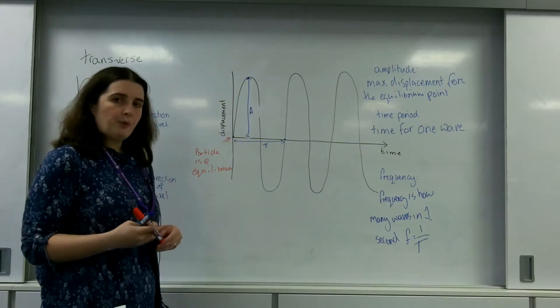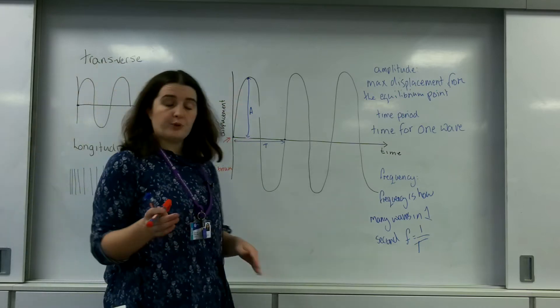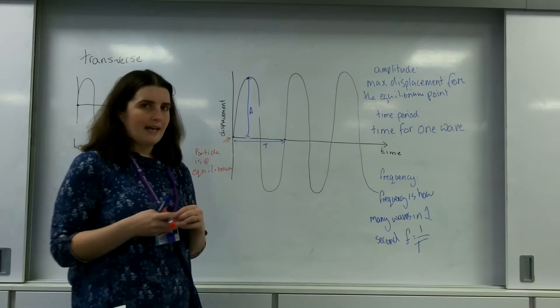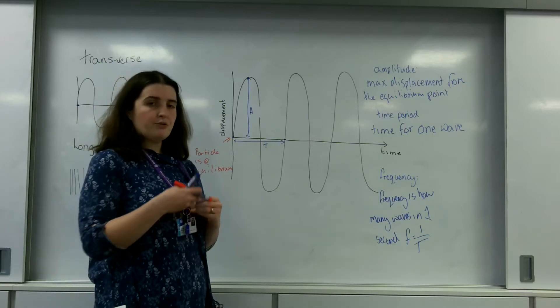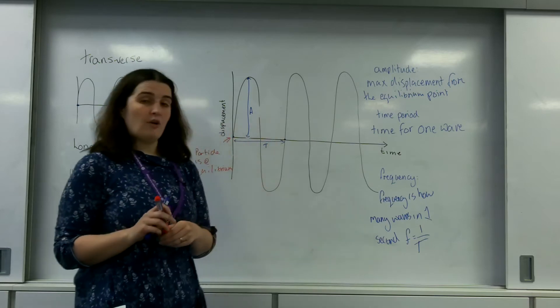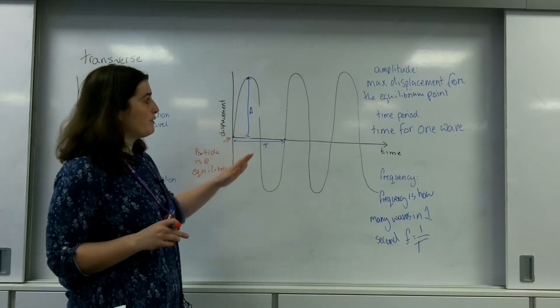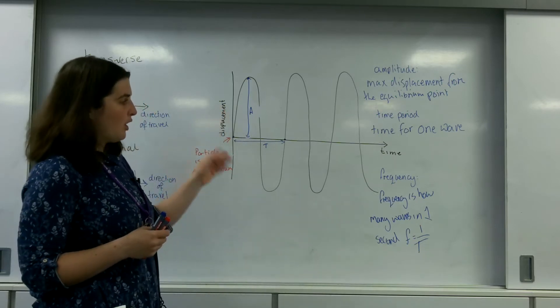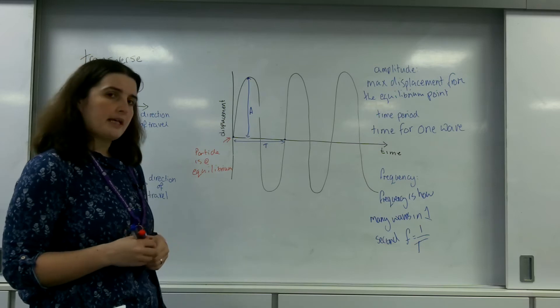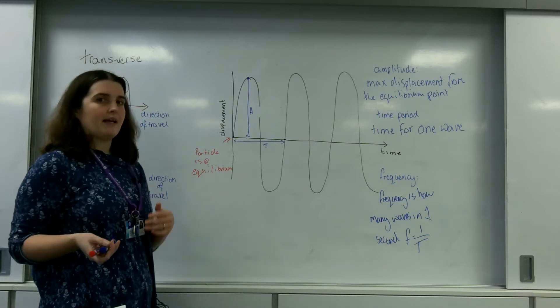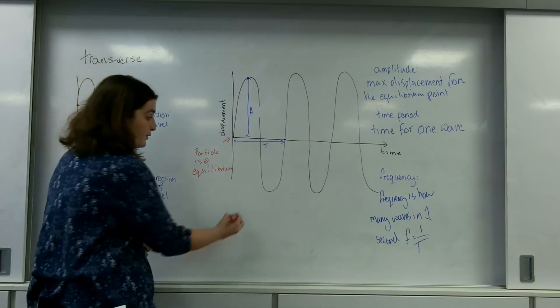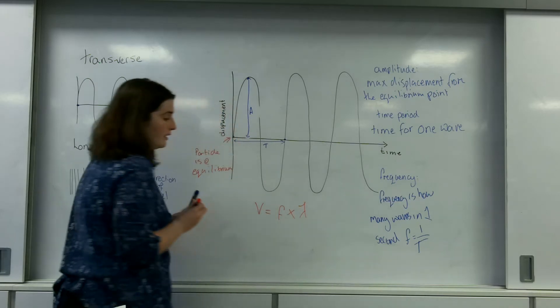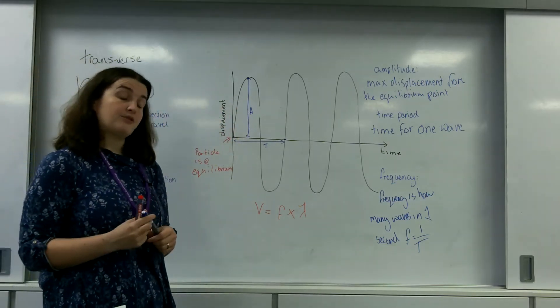Now, just to make you aware, this graph can give you all sorts of information, you can get the time period from it. But the one thing you can't directly get from this graph is the wavelength. So it's really important that you are aware of the axes. So this is a graph to represent both transverse and longitudinal waves. And we can get information about an object's amplitude, time period, and of course its frequency. But you can't get the wavelength directly from this. That's when you use formula like V equals F times lambda to get this if you have been given the extra information.